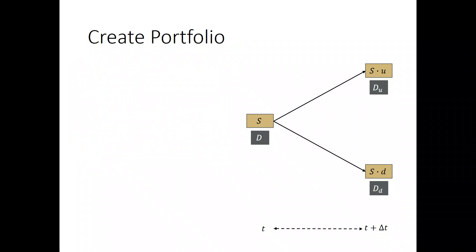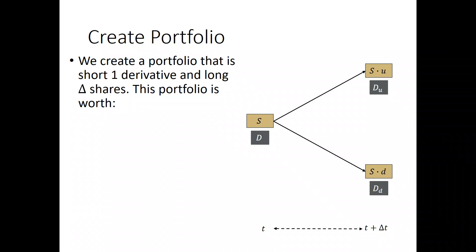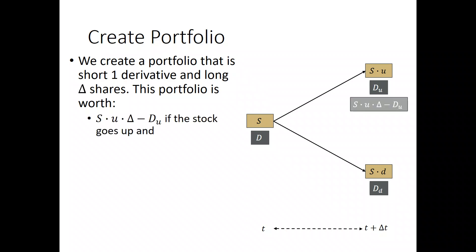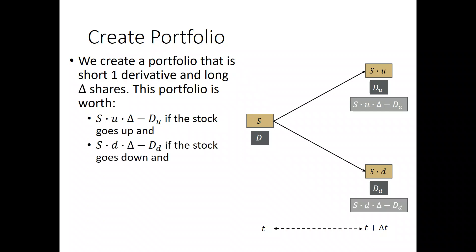Our usual approach is to create a portfolio which has no risk. We'll create a portfolio that is short one derivative and long delta shares. If the stock goes up, this portfolio is worth s times u times delta minus d sub u. And if the stock goes down, it's worth s times d times delta minus d sub d. And today, that portfolio is worth s times delta minus d.